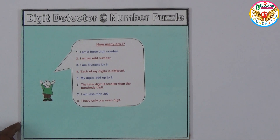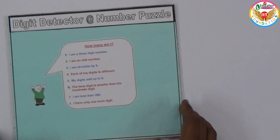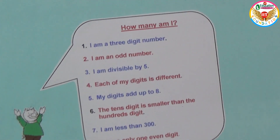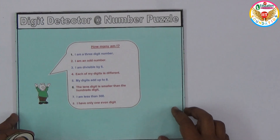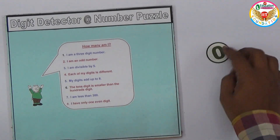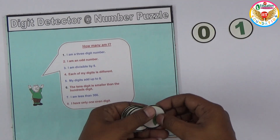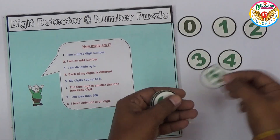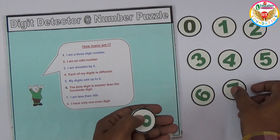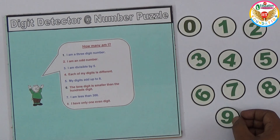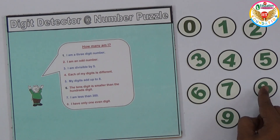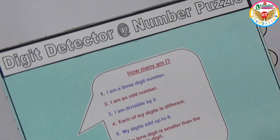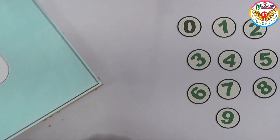We solve this step by step. The first clue says I am a three-digit number. We can consider all digits from zero to nine, and step by step we need to eliminate them one by one.